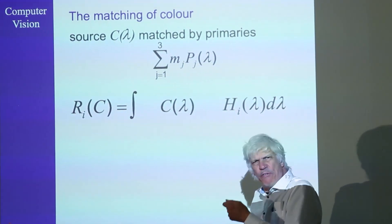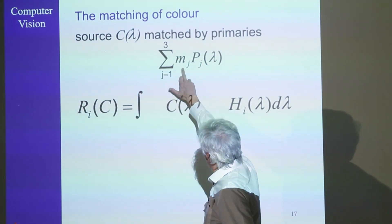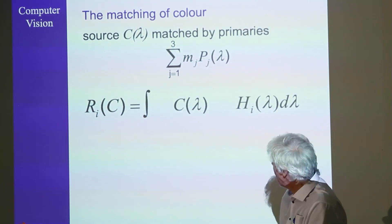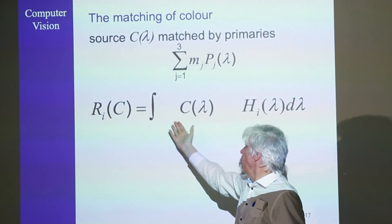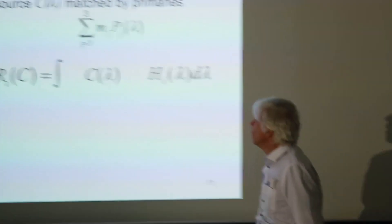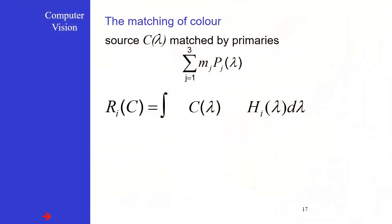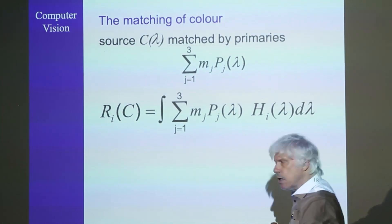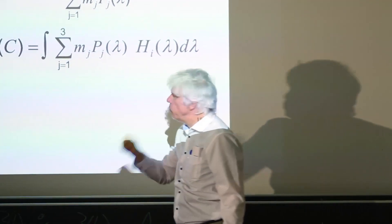We take different amounts of these primaries — M1 of the first primary, M2 of the second, and M3 of the third — to get the same impression as C. We choose M1, M2, M3 such that this combination of three monochromatic primaries is perceptually the same as the more complex light source C. The trick is to get the same cone responses R. So we replace C by this linear combination and search for the M values that achieve this goal.